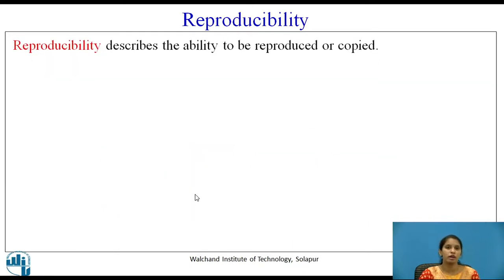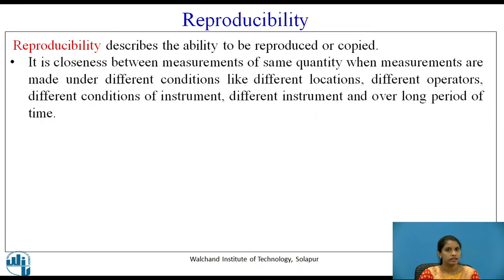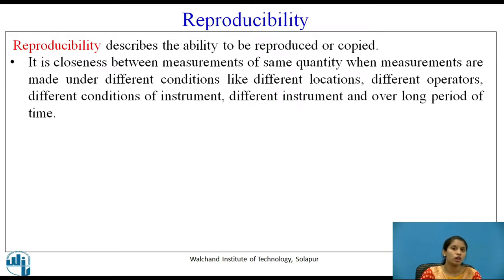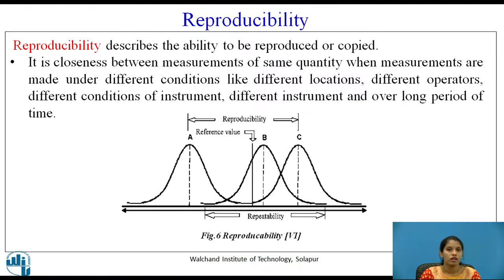Reproducibility describes the ability to be reproduced or copied. It is the closeness between measurements of the same quantity when measurements are made under different conditions — such as different locations, different operators, different conditions of the instrument, different instruments, and over a long period of time. Figure 6 shows reproducibility, illustrating repeatability, reproducibility, and the reference value line.